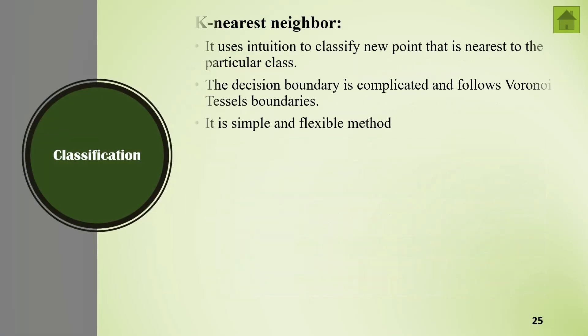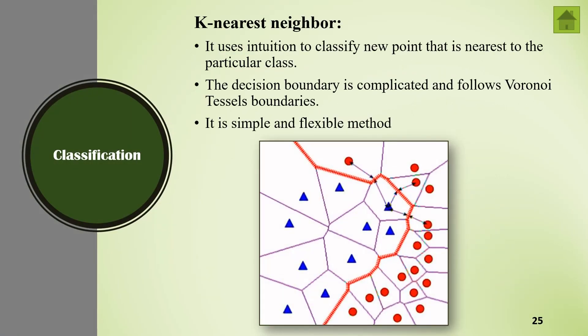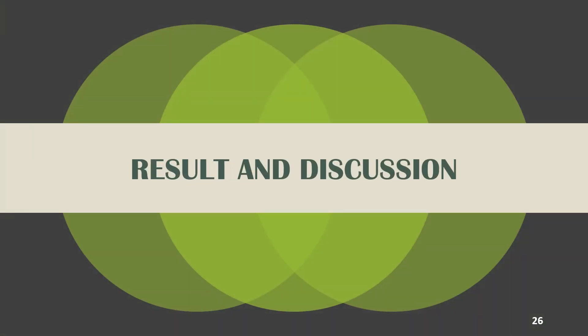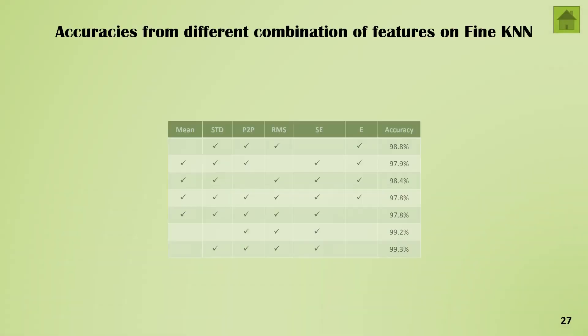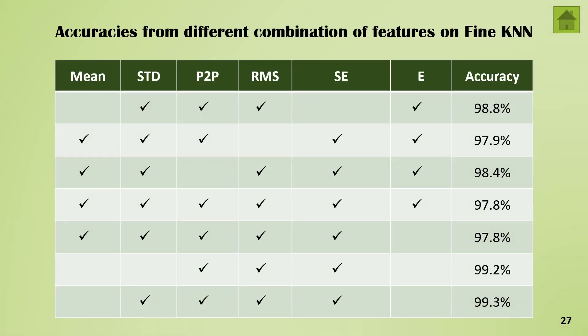Moving forward to the final step, classification, I used K-nearest-neighbor technique because there are a wide range of samples and it needs a flexible algorithm to classify them correctly. K-NN is one of the simplest and most flexible methods and we can achieve great results from it. Here are some combinations of features that I used, among which standard deviation, peak-to-peak, RMS, and Shannon energy gives the highest result.